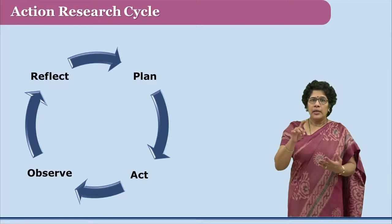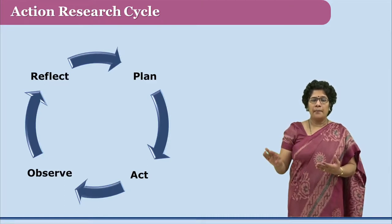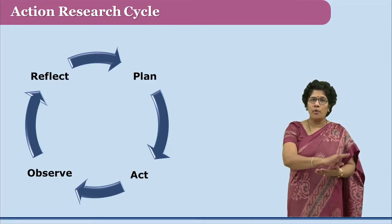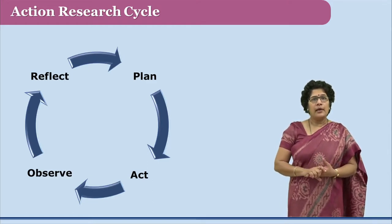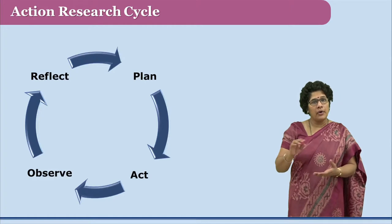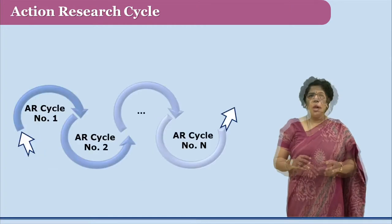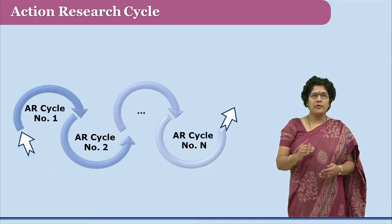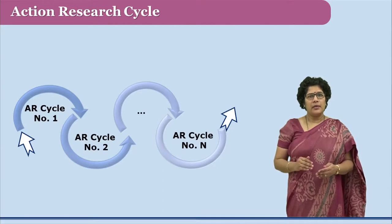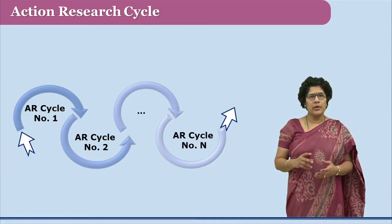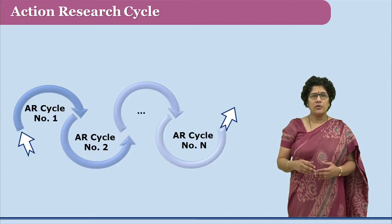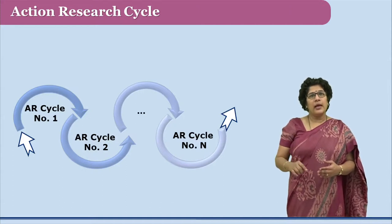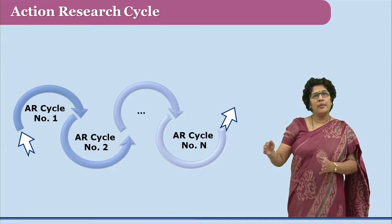When these four stages — reflection, planning, action, and observation — are completed, one cycle of action research is completed. After one such cycle, the researcher takes a review of the success or failure of the change in modality. Such cycles are continued until the problem is solved to the fullest extent. Thus action research is a cyclic process.